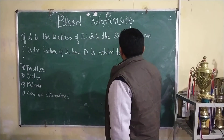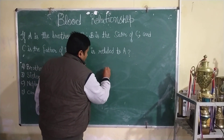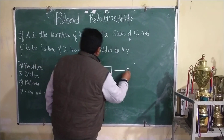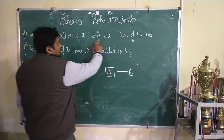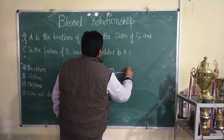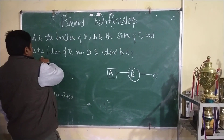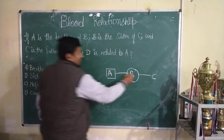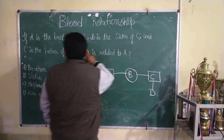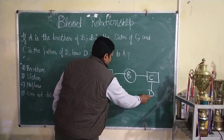A is the brother of B. B is the sister of C. C is the father of D. So we are working through how these relationships connect back to A.